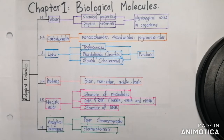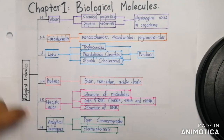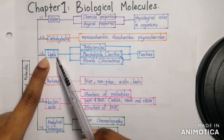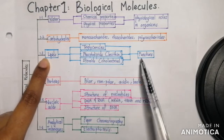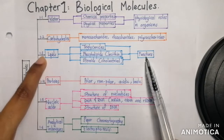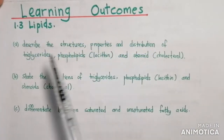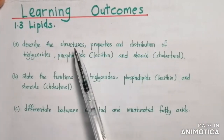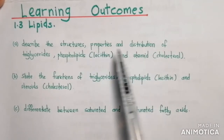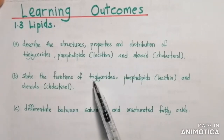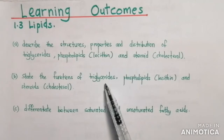Hi friends, today we'll be studying chapter 1, biological molecules, subtopic 1.3: lipids, triglycerides and its functions. The learning outcomes for this subtopic will be: describe the structures, properties, and distribution of triglycerides, and state the function of triglycerides.